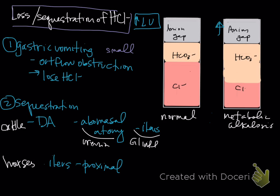You can have a concurrent titrational metabolic acidosis and a metabolic alkalosis. You won't have a concurrent secretional acidosis because chloride does the opposite thing. Animals can have complex acid-base disturbances with titrational metabolic acidosis most commonly, and then a metabolic alkalosis or potentially secretional metabolic acidosis, depending on what's occurring.